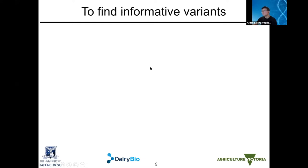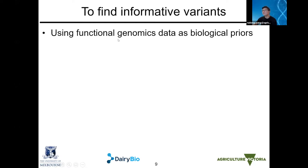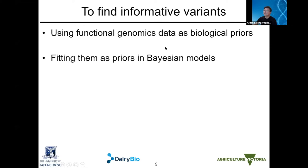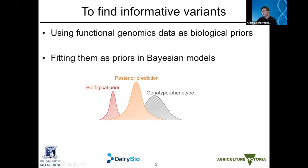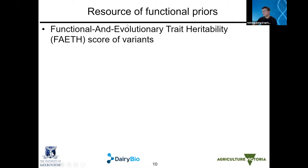To find these informative variants, we use functional genomic data as biological priors. The models that best take priors are Bayesian models, which are very flexible. Simplified: when we have observational data — the relationships between genotypes and phenotypes as a distribution — we can fit a biological prior as another distribution to adjust our posterior estimates or predictions, making a more accurate map and prediction. This heavily relies on having good priors.